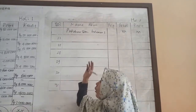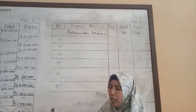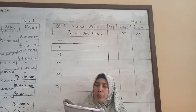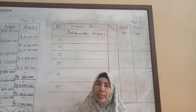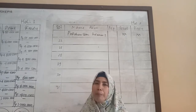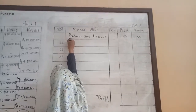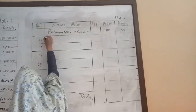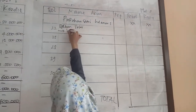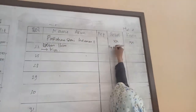Transaksi tanggal 22, pengeluaran kas sebesar Rp600.000 untuk pemasangan iklan di surat kabar. Kalau pemasangan iklan, kita mengeluarkan sebagai beban iklan. Beban iklan bertambah pada posisi debit. Mengeluarkan uang, nama akunnya kas pada posisi kredit, sebesar Rp600.000.